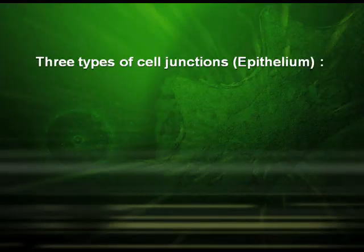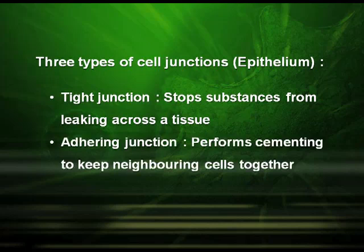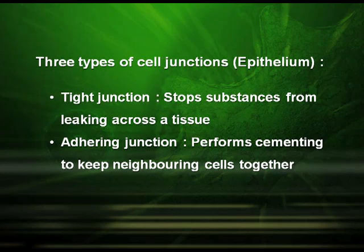These tissues have three types of cell junctions. The first is the tight junction, which stops substances from leaking across a tissue. The second is the adhering junction, which performs cementing to keep neighboring cells together. The third is the gap junction, which facilitates cells to communicate with each other.